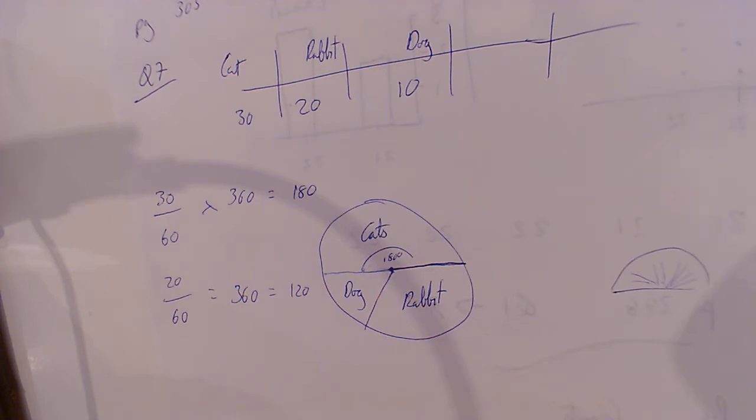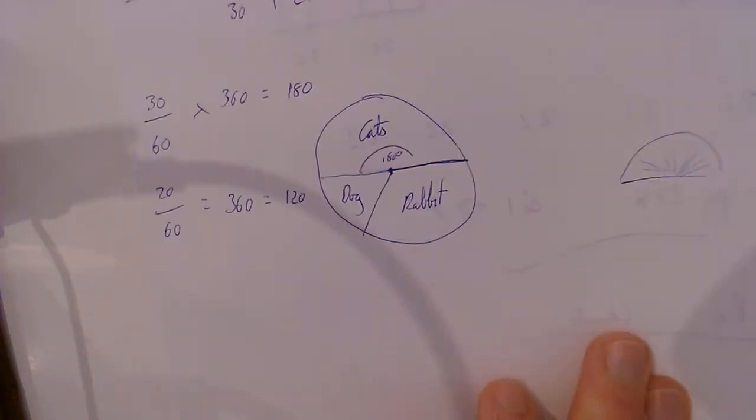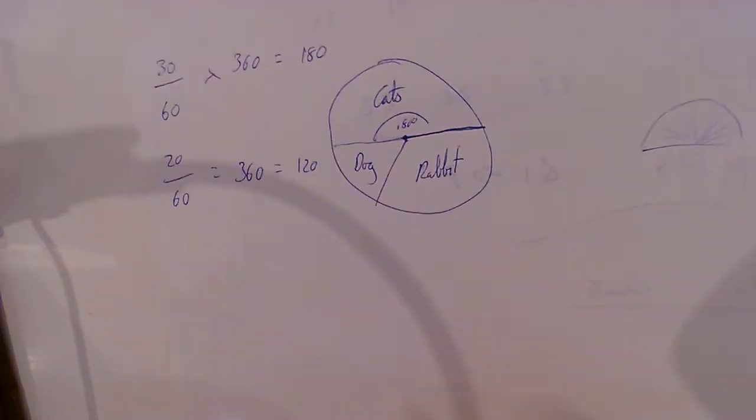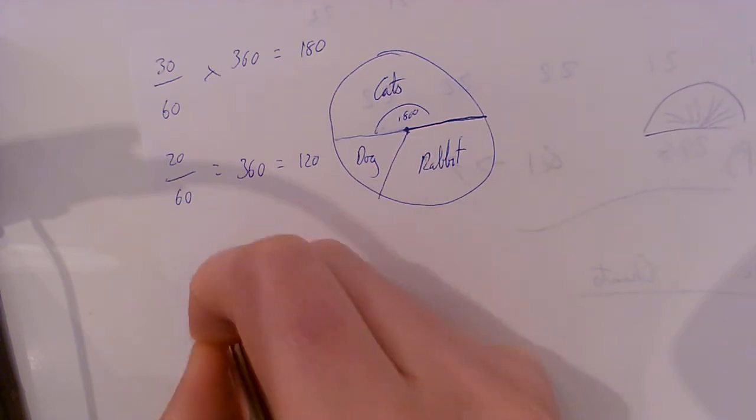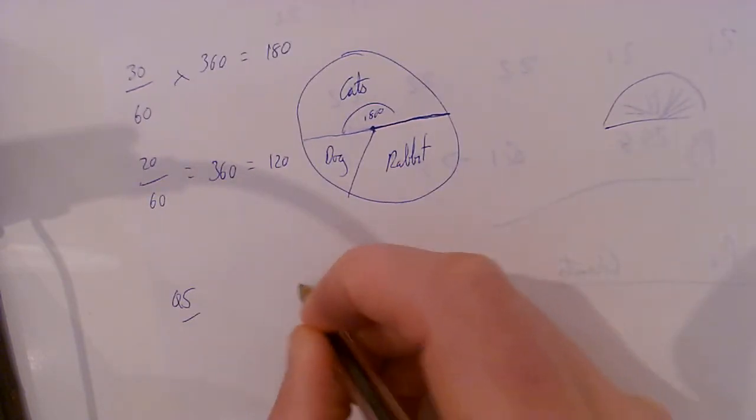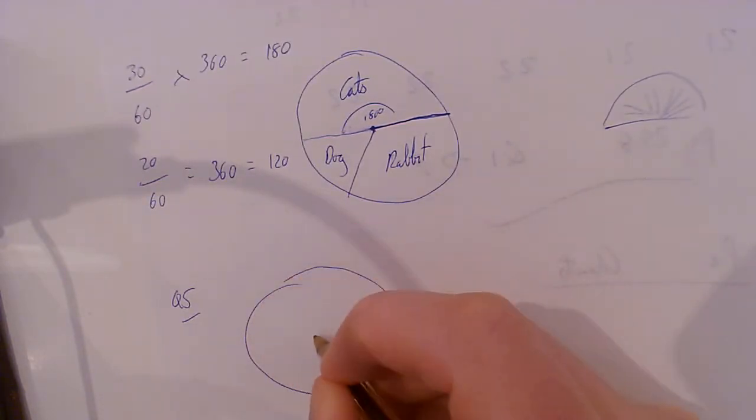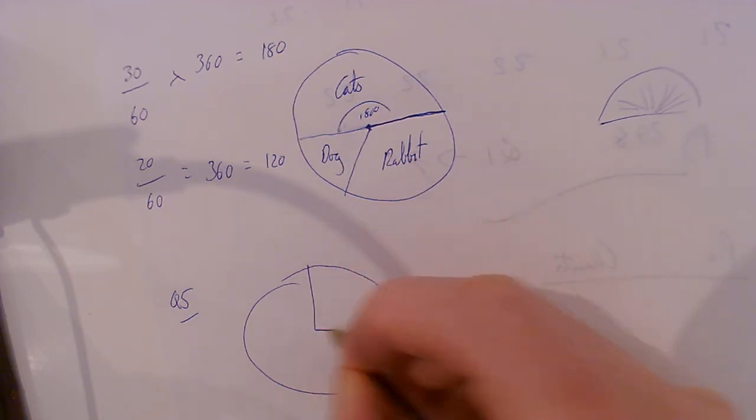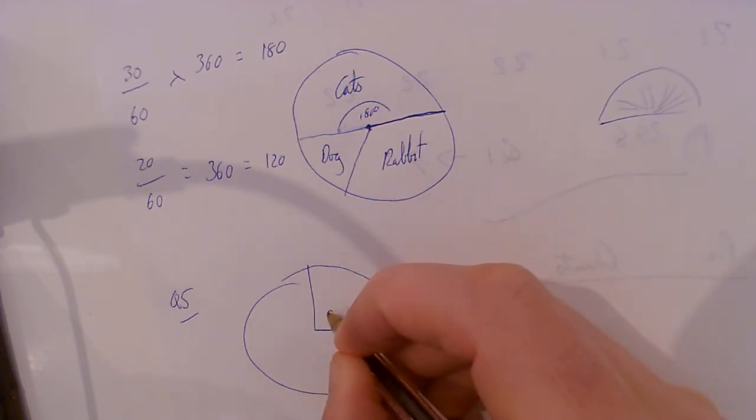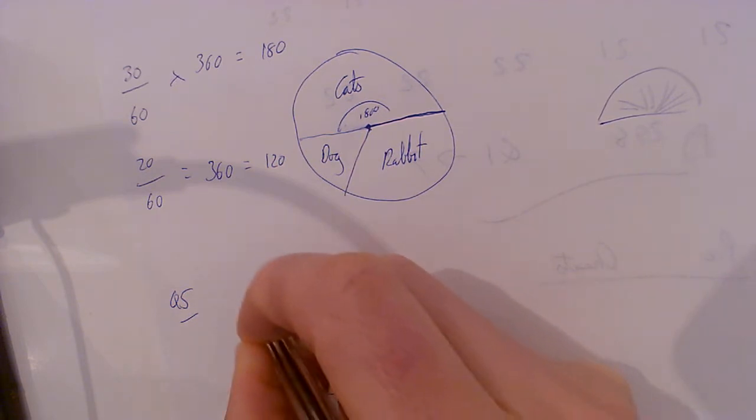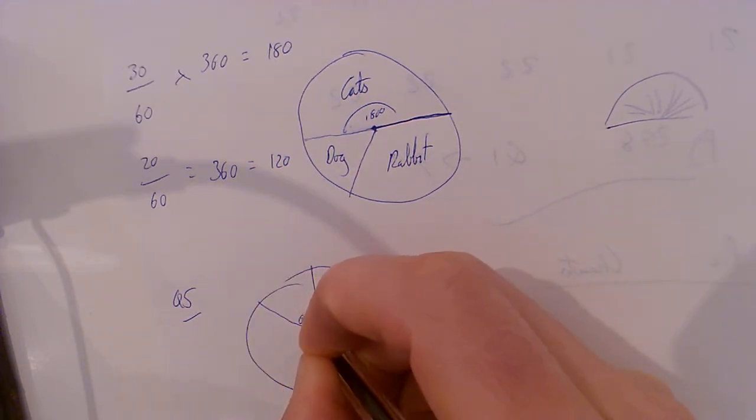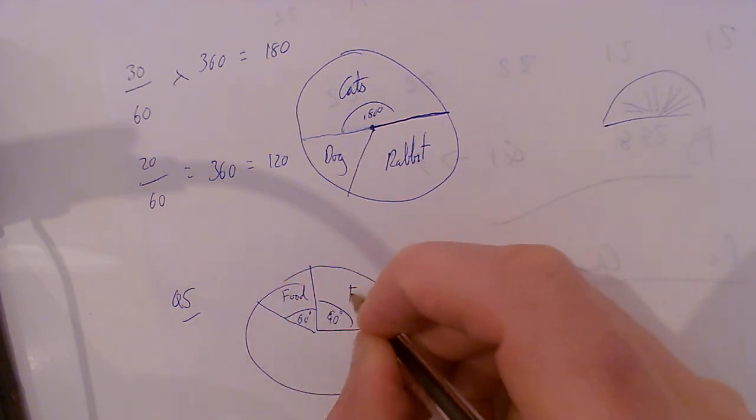Now question 5. I'll work out one of these. Circle again - lovely circle. It gives you 90 degrees here. I'm just going to work out two for this. It gives you food at 60 degrees - food and flights.